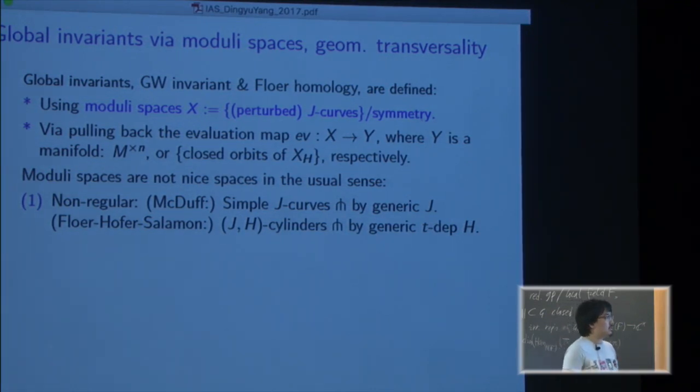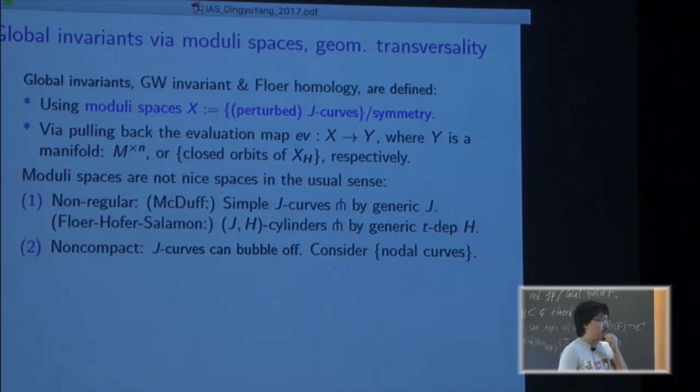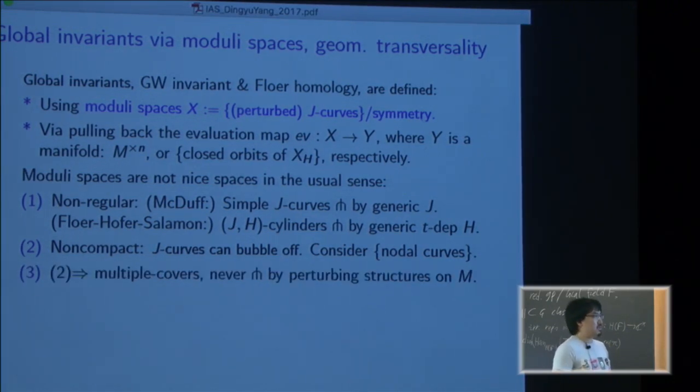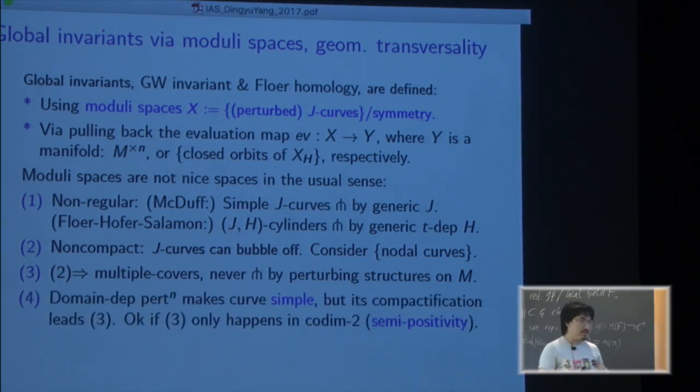By perturbing a little bit you get it, but it can bubble off, so you cannot just consider the J-curve but you have to consider the J-curve with the other nodal curve added to it. But this gives you a problem because it might have a multiple cover, which means that some, maybe for example a sphere wraps around itself a few times, and this can never be achieved transversely because the simple curve condition is violated. Then you try to be clever and say okay I can do a domain dependent perturbation to make the curve simple, but then you have to consider compactification which leads to issues again.